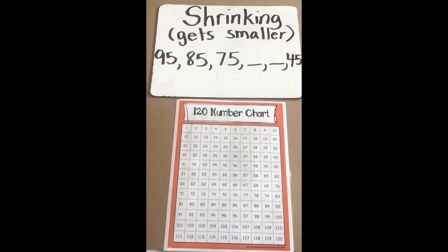All right, let's try a shrinking pattern. We're going to use our 120 number chart as a tool to help us figure out the missing numbers and also to help us figure out the rule so we know what numbers are missing.